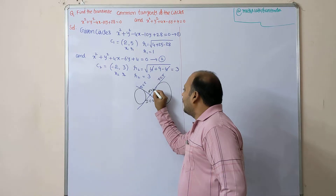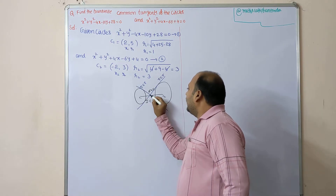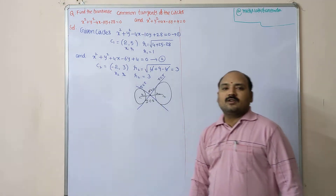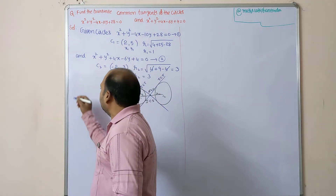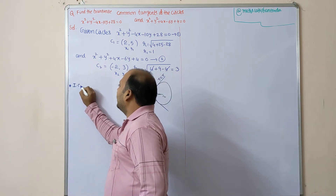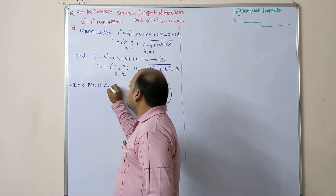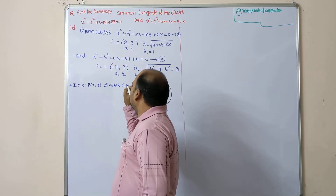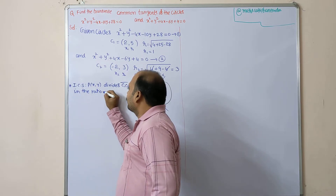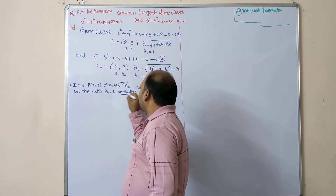The internal center of similitude ICS is generally denoted as point P(x, y). Point P divides the line segment c1c2 in the ratio r1 : r2 internally. This internal division is a very important step.